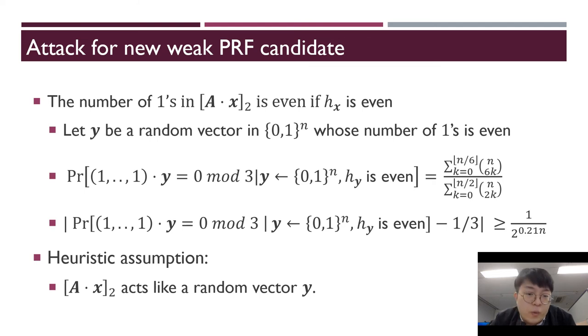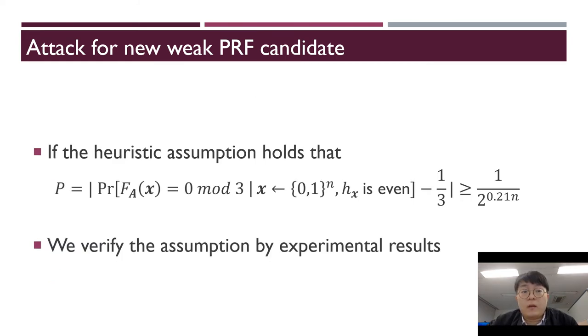The difference of conditional probability from 1 third is similar to 1 out of 2^(0.21n). We need a heuristic assumption: that A times x acts like a random vector y. If the heuristic assumption holds, then the difference of the following conditional probability from 1 third is similar to 1 out of 2^(0.21n).